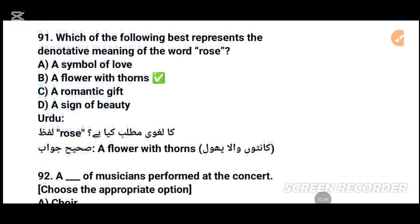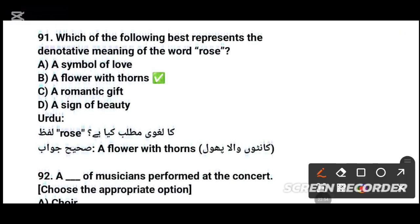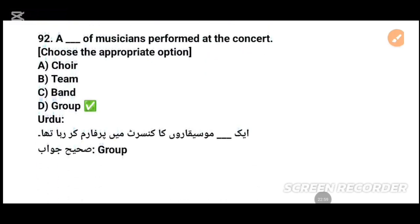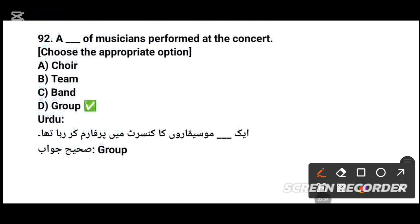MCQs number 91: Which one of the following best represents the denotative meaning of the word 'rose'? Dictionary meaning — option B, tick that. MCQs number 92: A dash of music can perform — a band — option C, tick that.